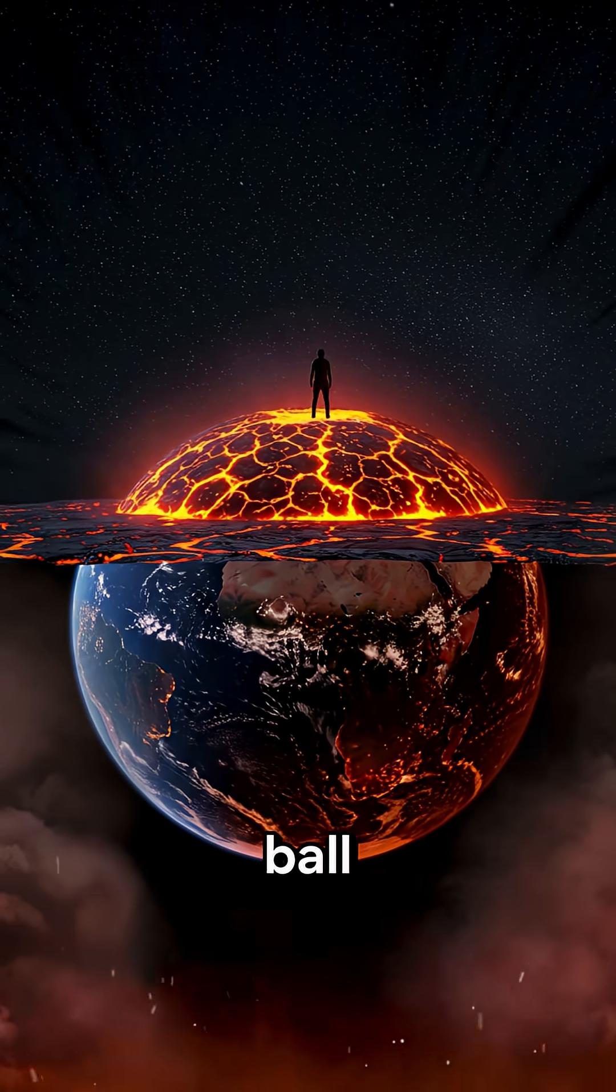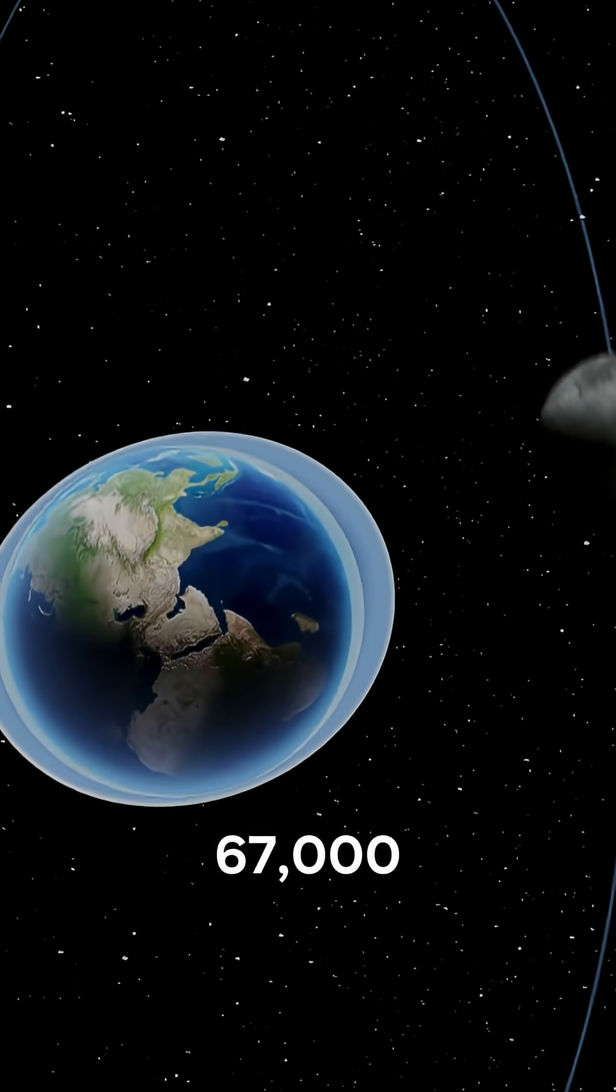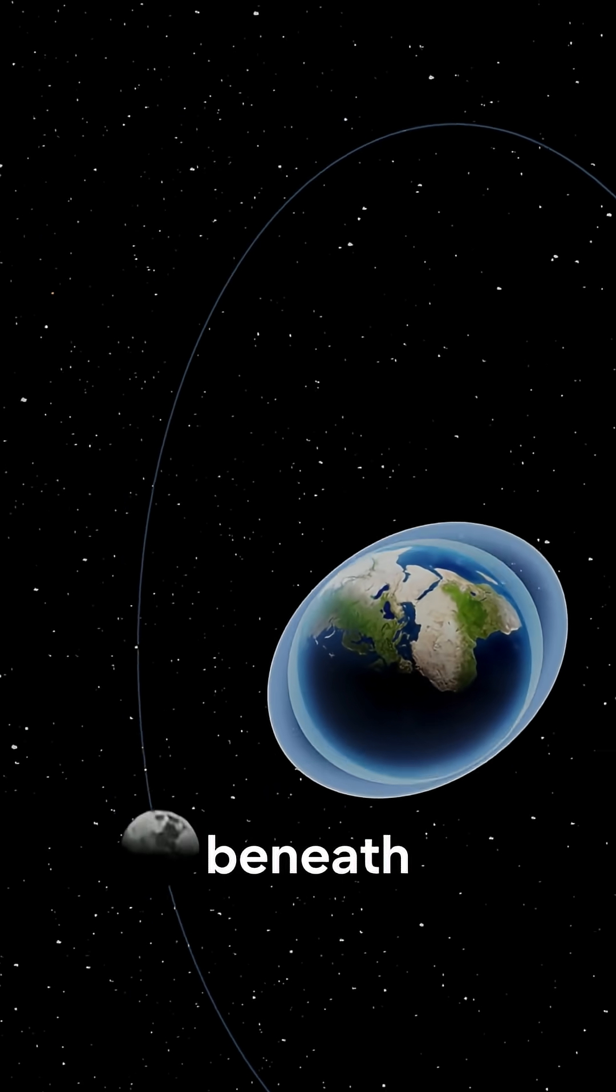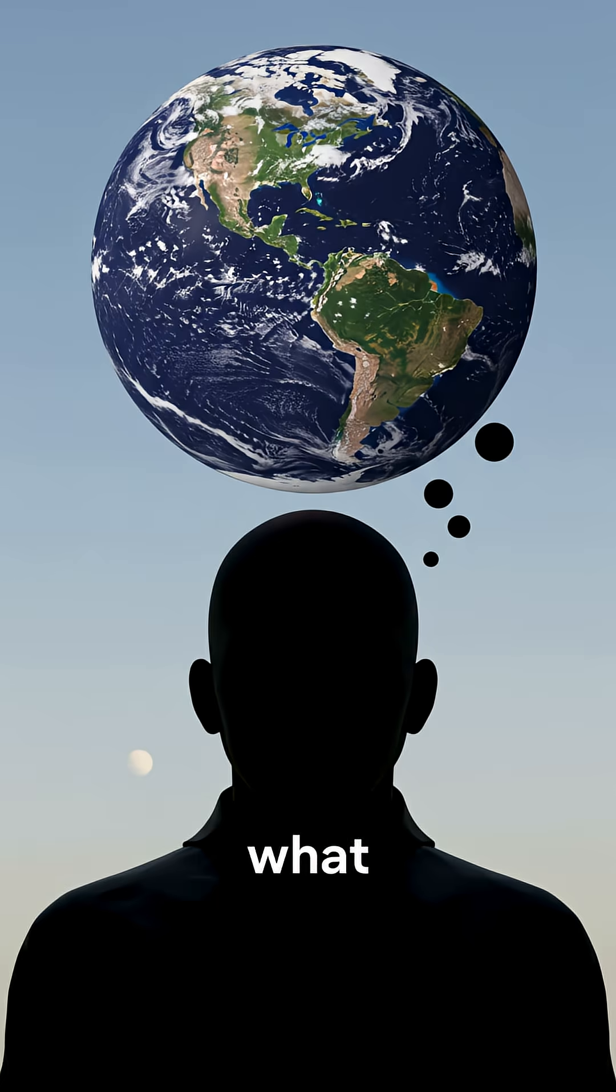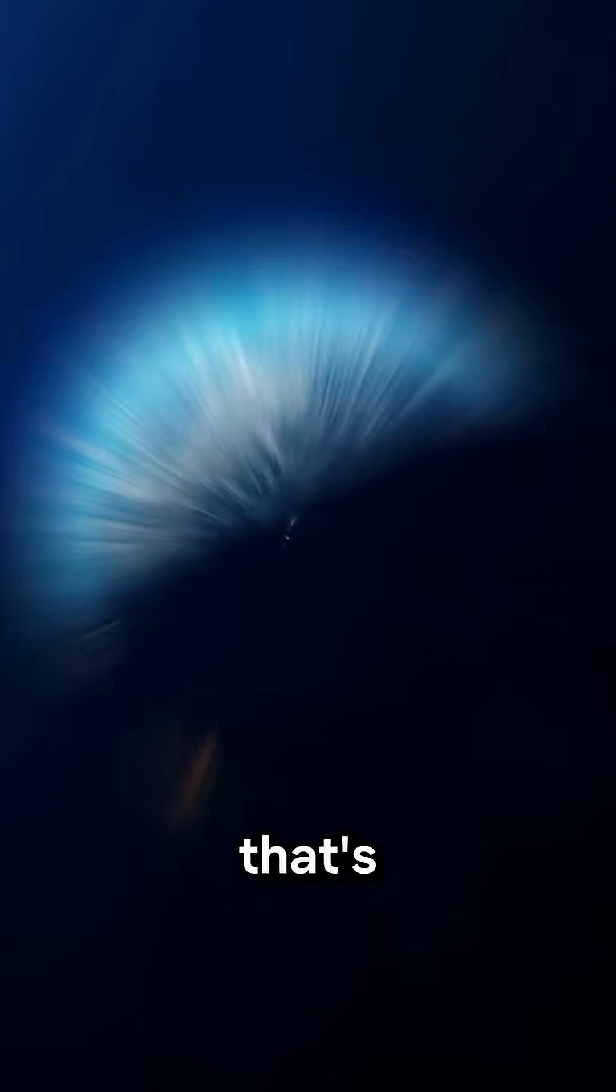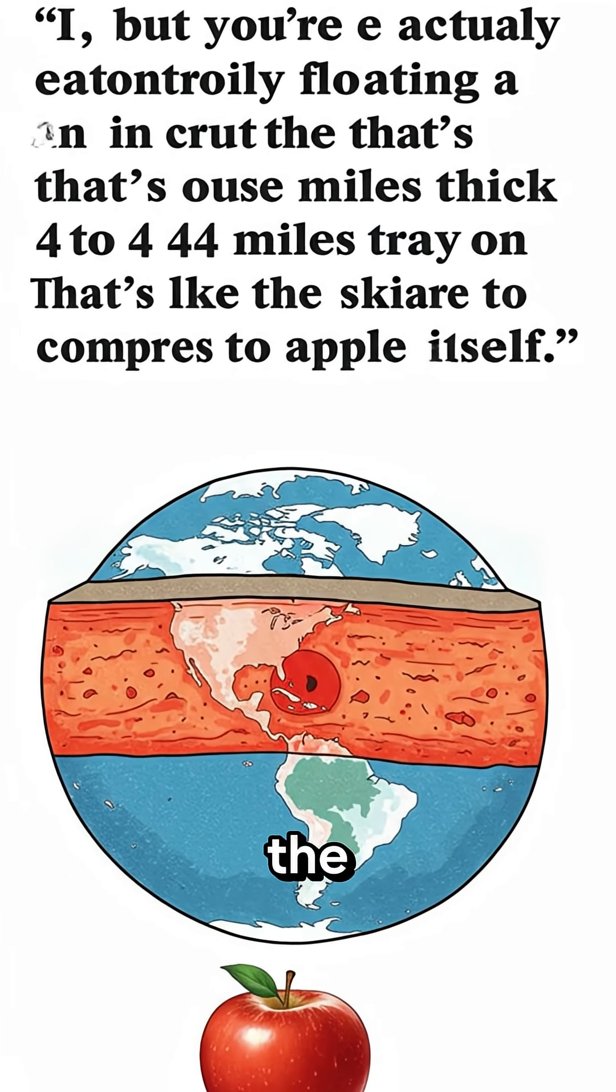Right now you're standing on a ball of molten rock flying through space at 67,000 miles per hour and you have no idea what's beneath your feet. Earth isn't what you think it is. You're actually floating on a thin crust that's only 3 to 44 miles thick—that's like the skin on an apple compared to the apple itself.